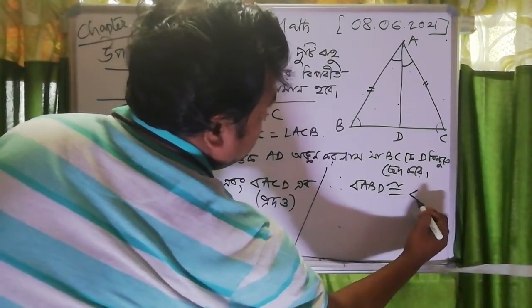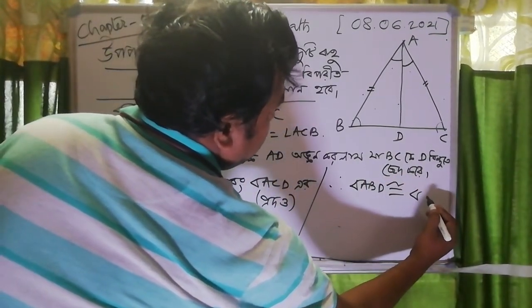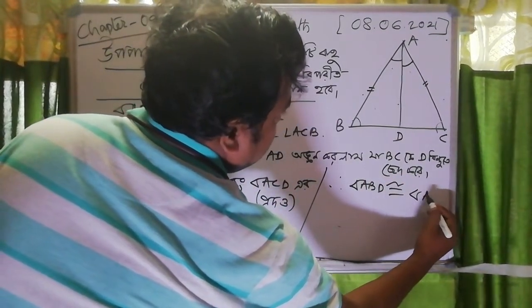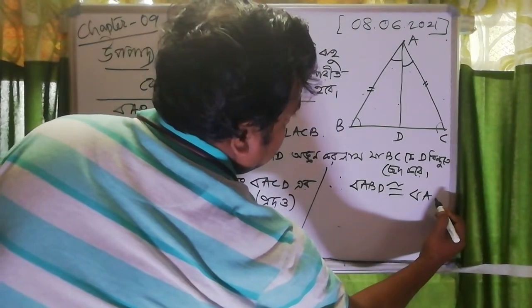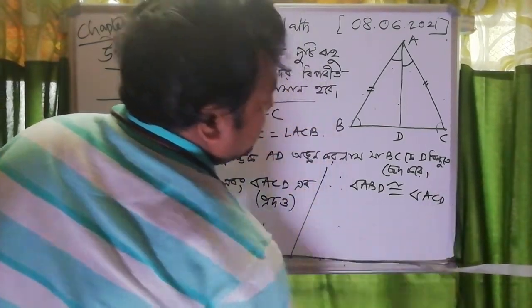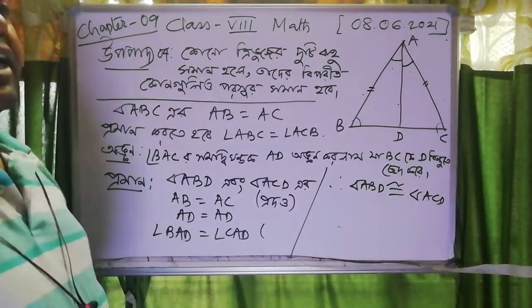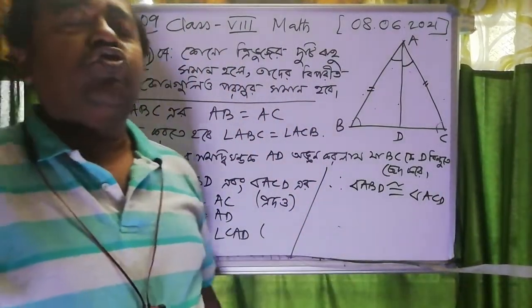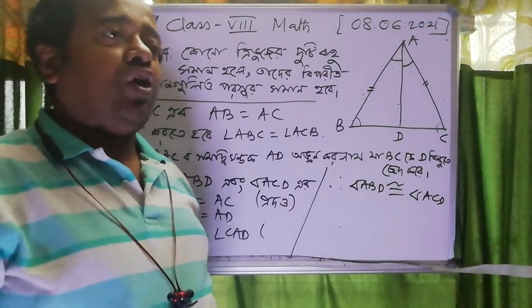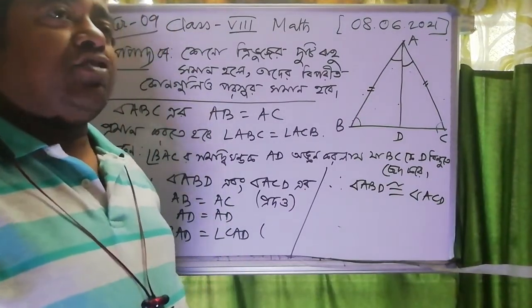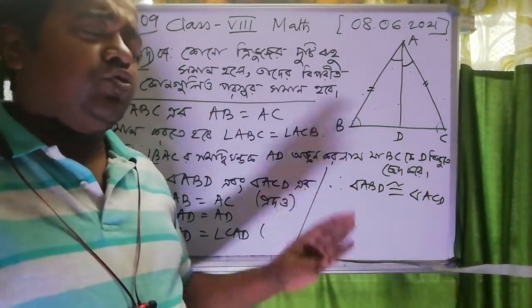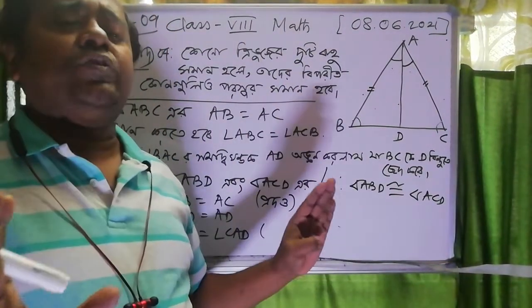ABD, SORBOSOMA, ACD. And the other three are SORBOSOMA. Actually, SORBOSOMA is the SORBOSOMA.